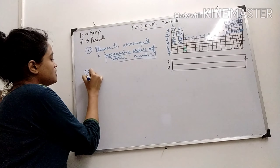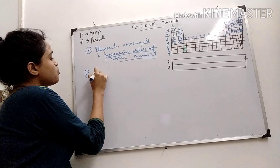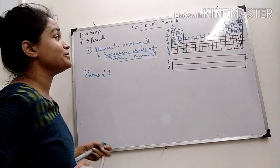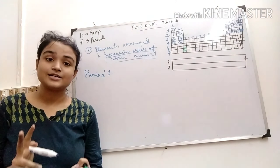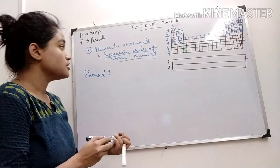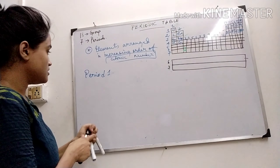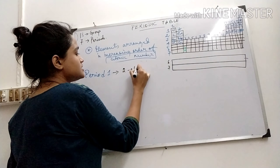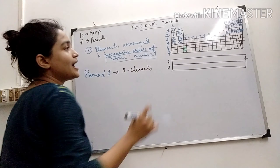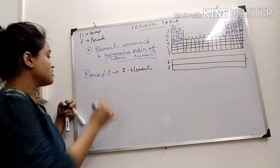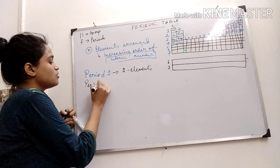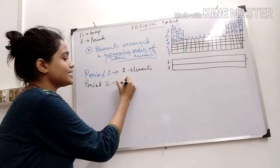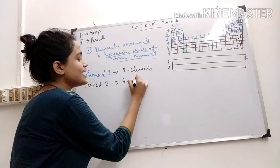Now, the periods. Period 1 is the smallest period of the periodic table because it contains only 2 elements, and those are hydrogen and helium. Period 2 is also a small period; it contains 8 elements.